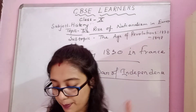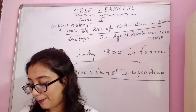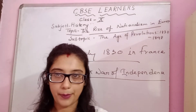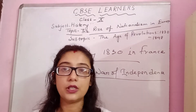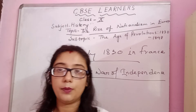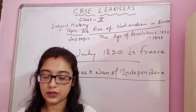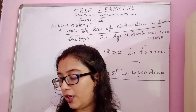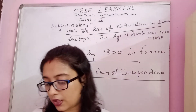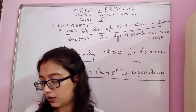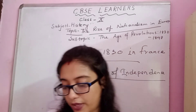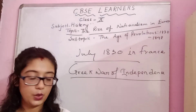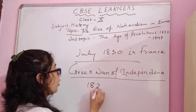Greece had been part of the Ottoman Empire since the 15th century — an empire ruled by the Ottoman Turks. The growth of revolutionary nationalism in Europe sparked a struggle for independence among the Greeks, which began in 1821.